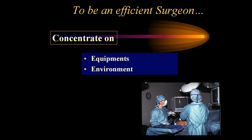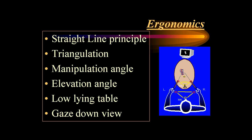To be an efficient surgeon, we should concentrate on the equipment and environment in which we operate. There are six important ergonomic principles: the straight line principle, triangulation, manipulation angle, elevation angle, low lying table, and gaze down view.